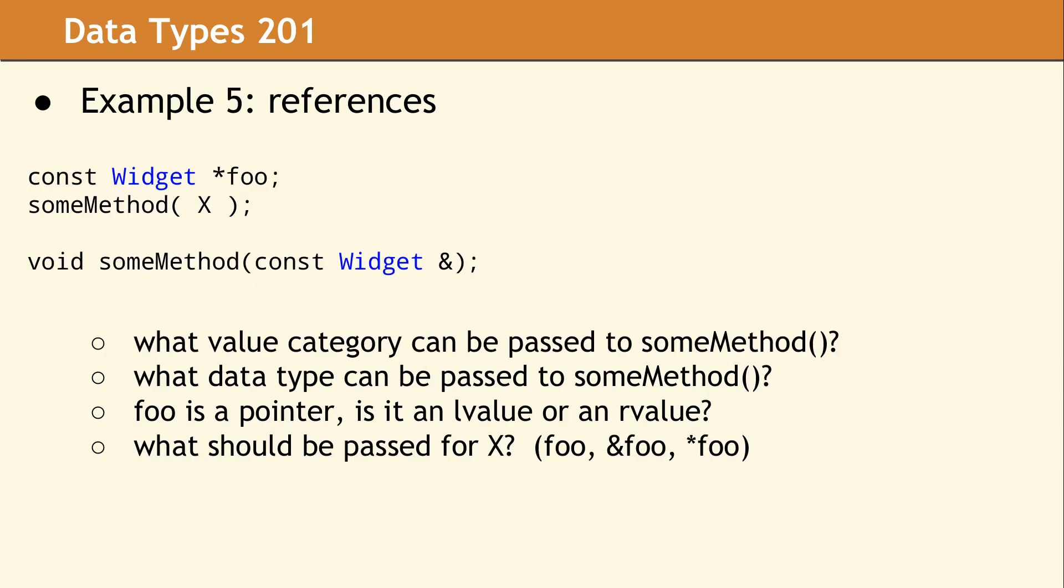In this example, foo is a pointer to a const widget, and some method wants a const reference. So what value category and data type can some method accept? And given that foo is a pointer, is it an L value or an R value? And what should be passed for x to some method? So the value category that can be passed to some method is either an R value or an L value. In terms of the data type, it needs to be a widget. Since foo has a name, it is an L value. And what should be passed for x? Star foo.